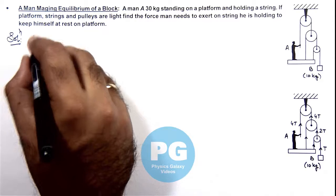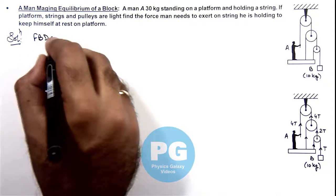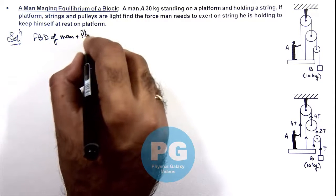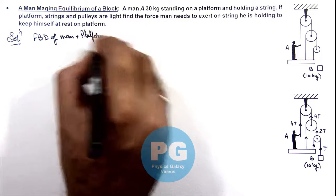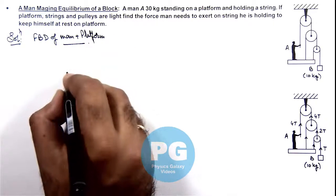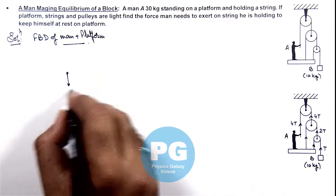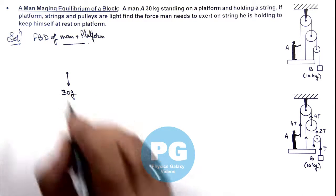If we draw the free body diagram of man plus platform, you can see in downward direction the total weight of man plus platform system is 30 kg, so it'll experience the weight 30g in downward direction.